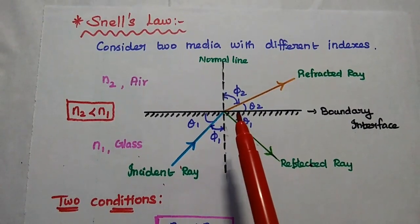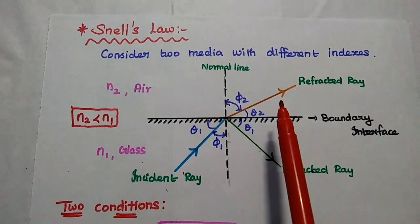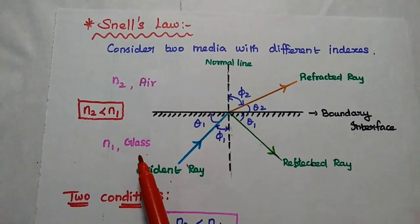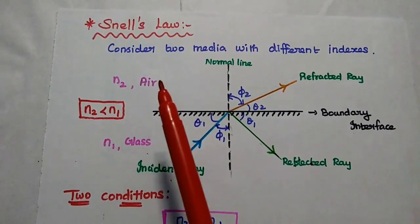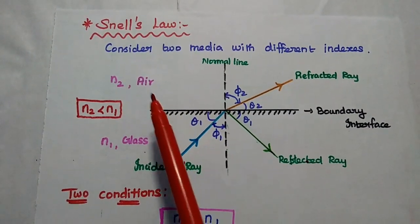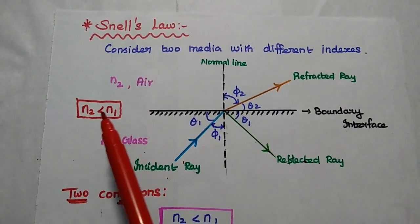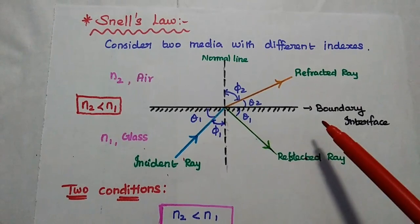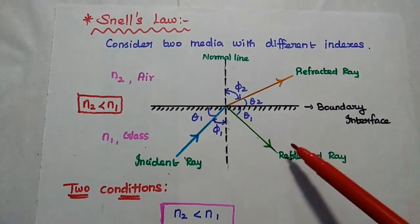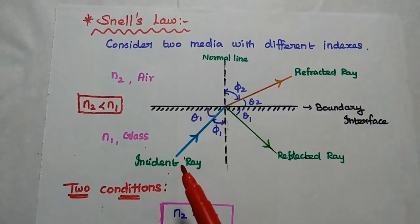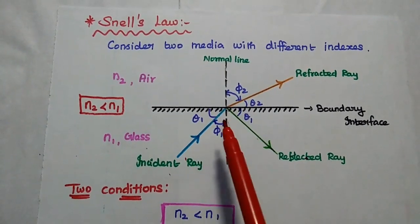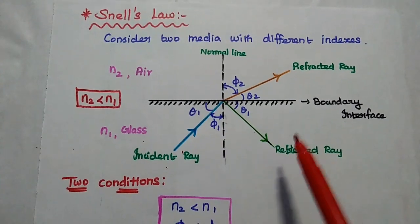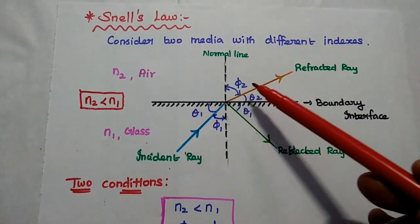The next one is Snell's law. It is an important optical law which relates the angle of incidence and the angle of refraction between two media with different indexes. Consider two media with different indexes: the first medium is a more dense medium — that is, glass medium — with refractive index n1, and the second medium is a less dense medium — that is, air medium — with refractive index n2, where n2 is always less than n1. The normal line is the perpendicular line with respect to this boundary interface. When the light wave propagates from the more dense medium to the less dense medium and is incident at an angle phi 1 at the boundary interface, part of the wave is reflected in the same medium, and the remainder is refracted into the second medium with the angle of refraction phi 2.